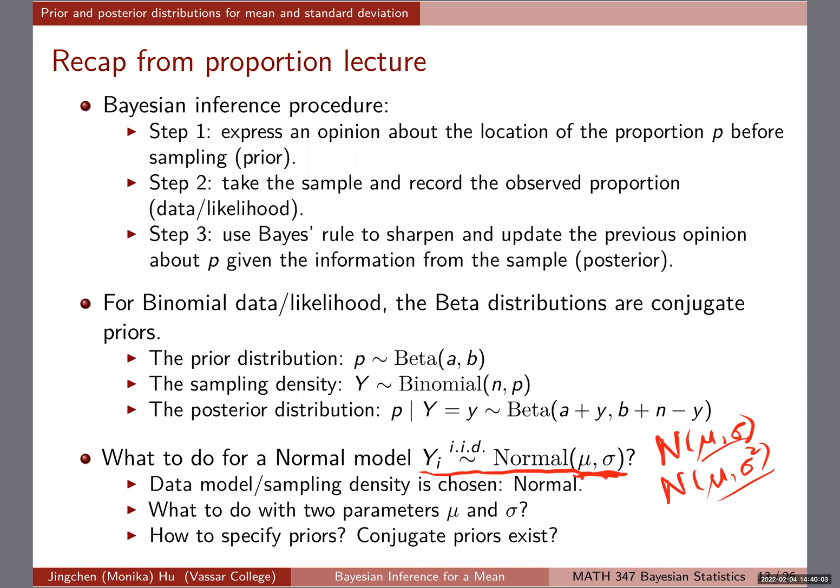The data model or sampling model, like the log expenditure we saw before, we're going to give a normal to it. We have two parameters, μ and σ. The question is: how can we specify priors for them? Do we do the same prior? Because we have two parameters, how are we supposed to get priors for two parameters? That's something new we're going to learn.